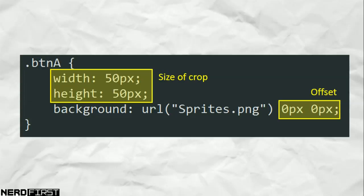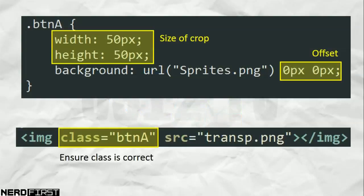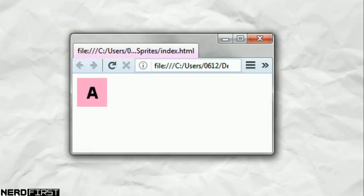In this case, because I want the letter A, which is 50 pixels both in height and width, the CSS is fairly simple. I just need to specify these four things, ensure that my HTML element is targeted correctly, and when I actually open that page, I get the results I expect.